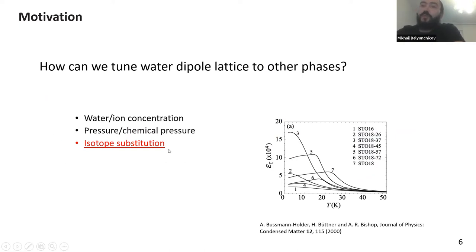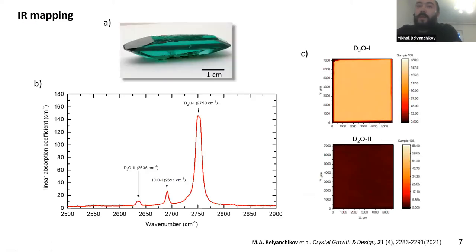One of the approaches used for different quantum paraelectrics is isotope substitution. Here you can see a picture for strontium titanate. The substitution of oxygen to heavy isotope leads to transition from quantum paraelectric behavior to a real phase transition toward ordered phase. So to do the isotope substitution, we grew the beryl crystal with heavy water inside. Here you can see the IR absorption spectrum. You can see the distinct peaks for heavy water one and heavy water two molecules. So we very well characterized this sample.